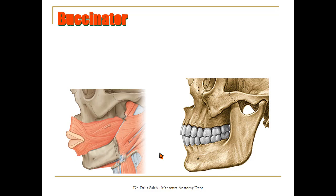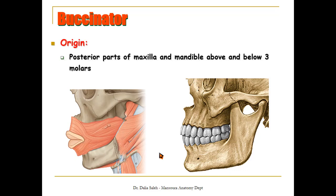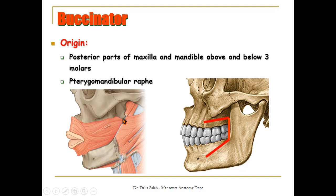The buccinator muscle takes its origin from the following: the part of the maxilla above the three molars, and from the mandible below the lower three molars, and in between from something called the pterygomandibular raphe. Raphe means the meeting of two muscles. This raphe extends from the pterygoid hamulus of the skull downward to the mandible, with the buccinator in front and the superior constrictor muscle of the pharynx at the back.